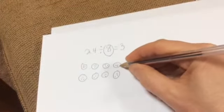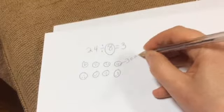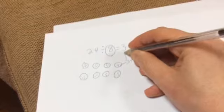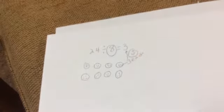Okay, so that shows me that 24 divided by 8 leaves 3 in each circle. And there's the answer, 3. They agree. So I put a little smiley face there.